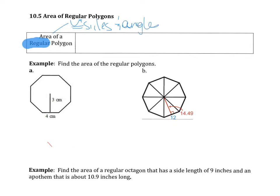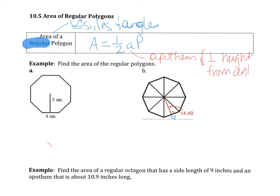So, just to remember that, our formula is area equals one-half the apothem times the perimeter. The apothem is the perpendicular height from the center to the side of the polygon — from center to side. And the perimeter, of course, is all the way around.